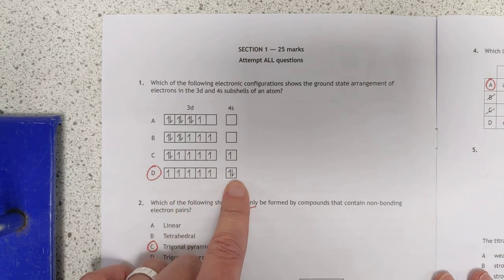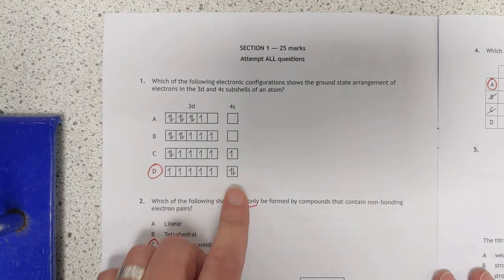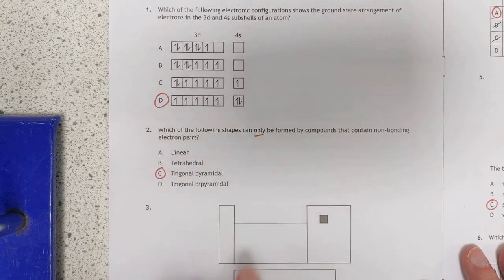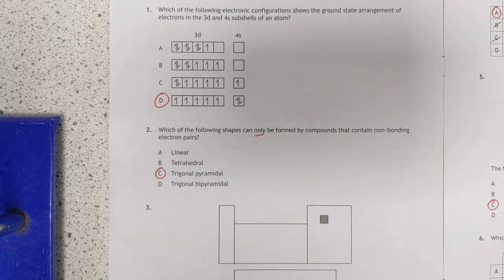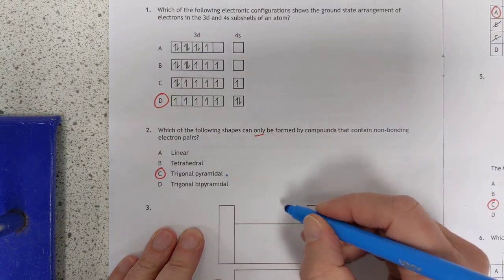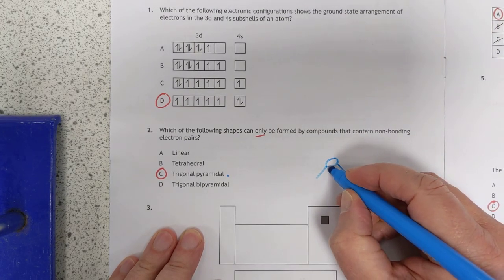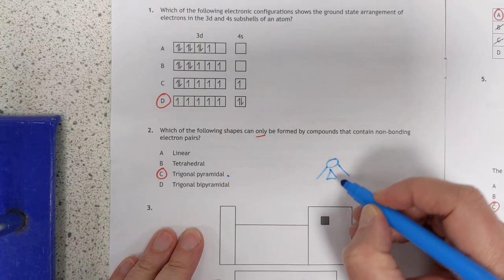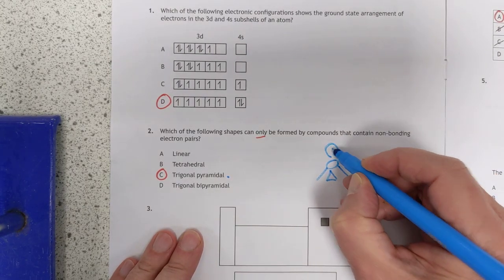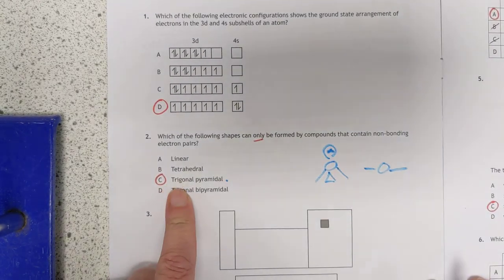We've got electrons, they fill the 4S before the 3D, so that is the ground state. If it's an atom, ions are different, but it's not an ion. This one here, only be formed by compounds that contain non-bonding electron pairs. Let me get a pencil. So trigonal pyramidal means that you've got something here, you've got something sticking down here, and something else sticking out. The reason these are that shape, and not just simply flat when viewed from the side, is because of the non-bonding electrons that are here. Three electrons! That's not right. So trigonal pyramidal.